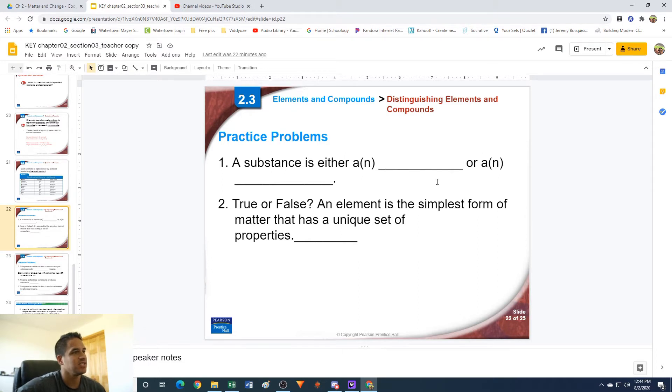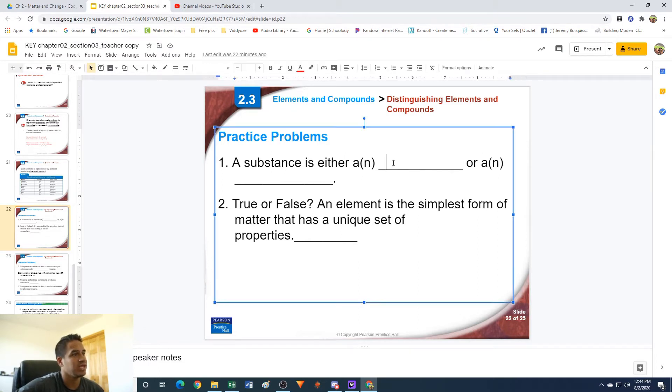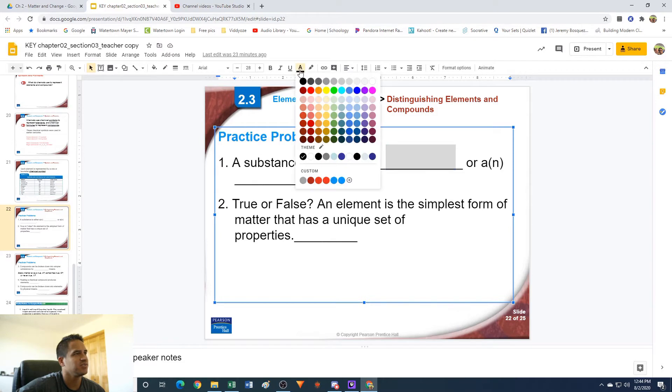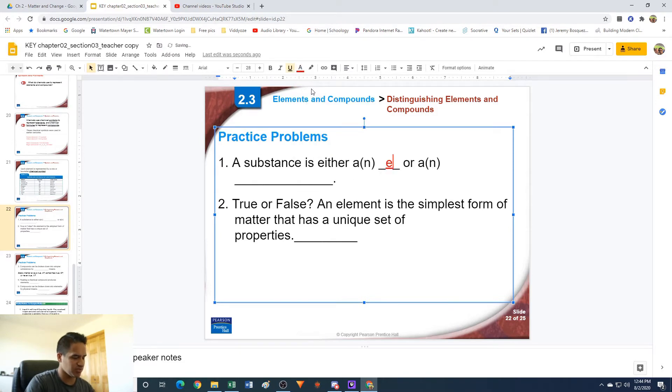Number one: a substance is either a blank or a blank. So if we're talking about substances, remember that substances can either be elements, so an element or a compound.